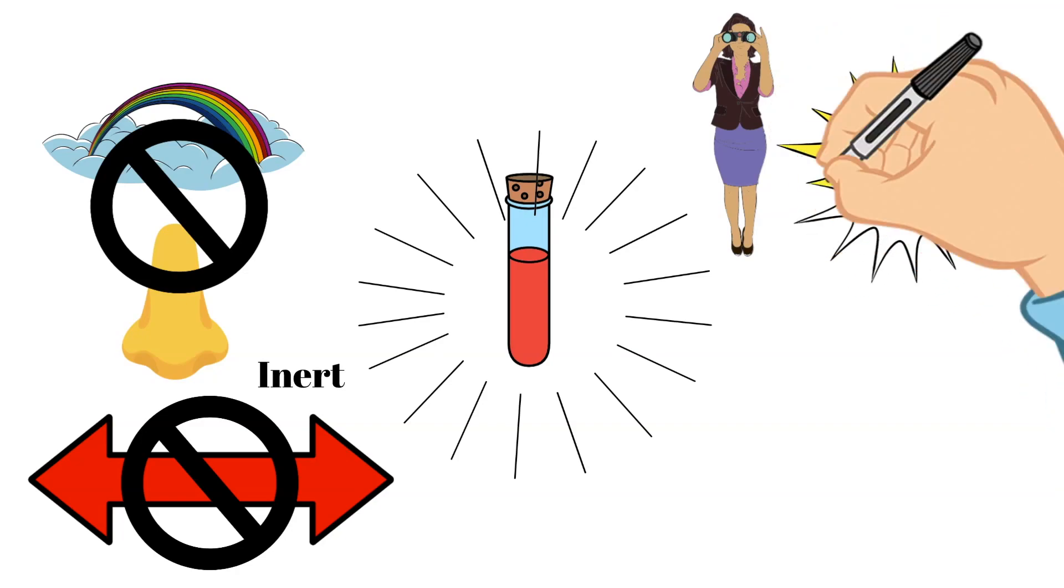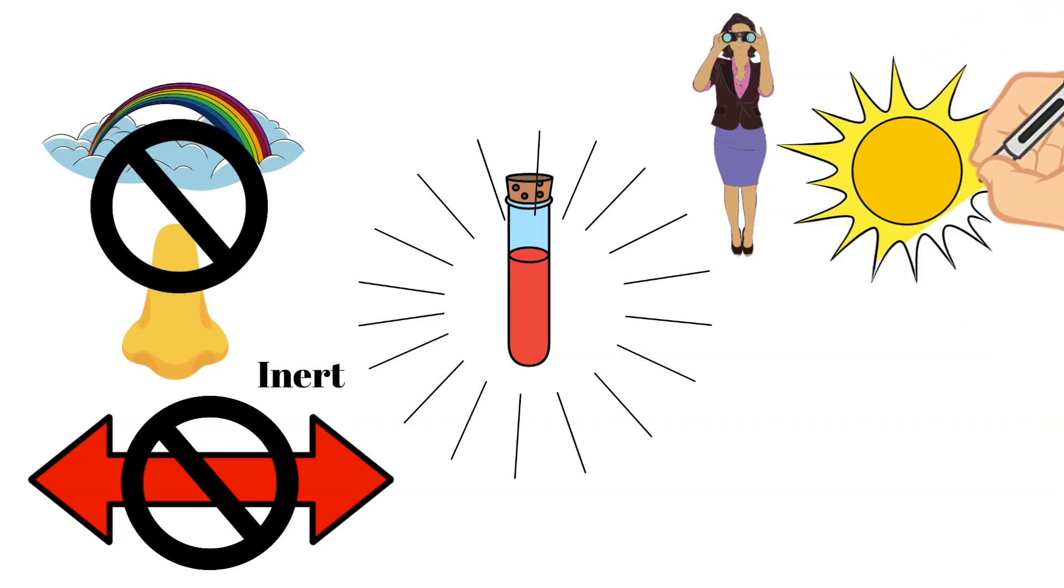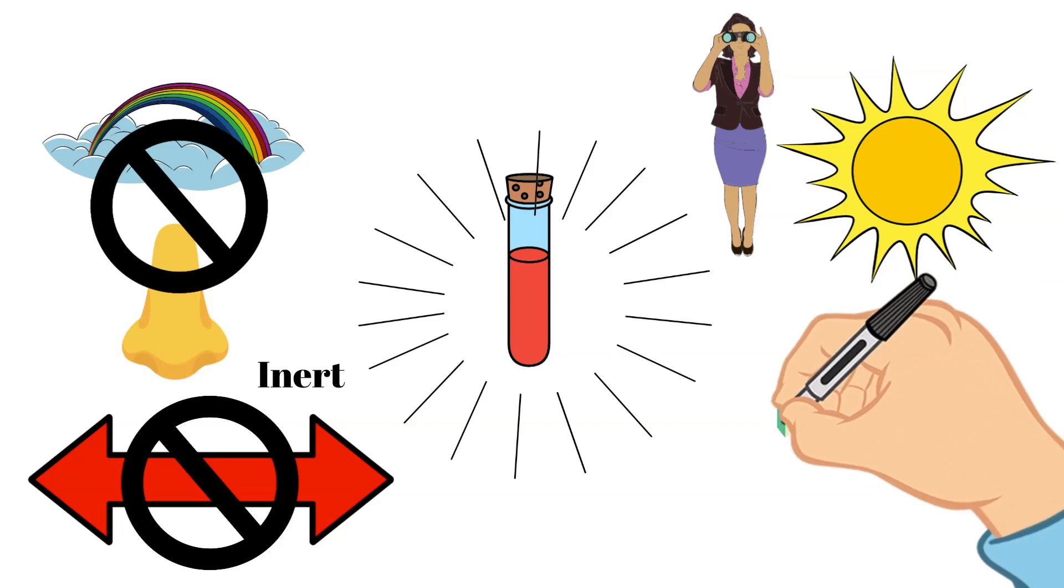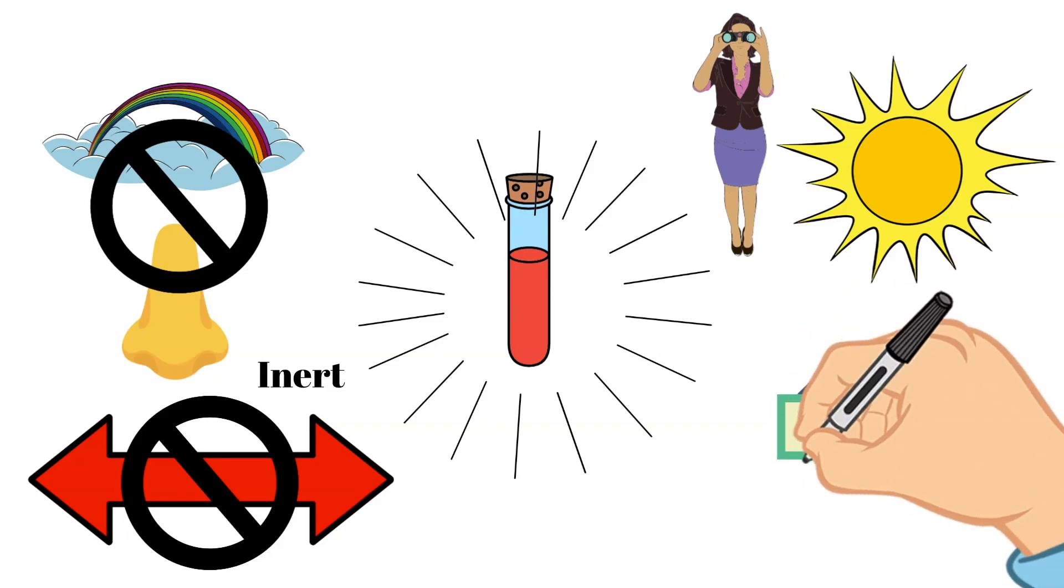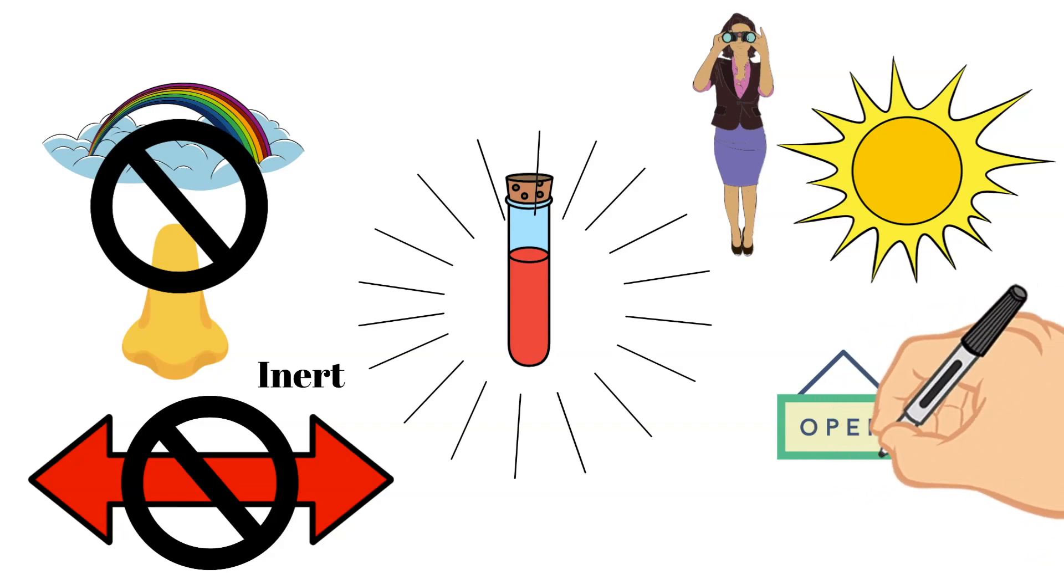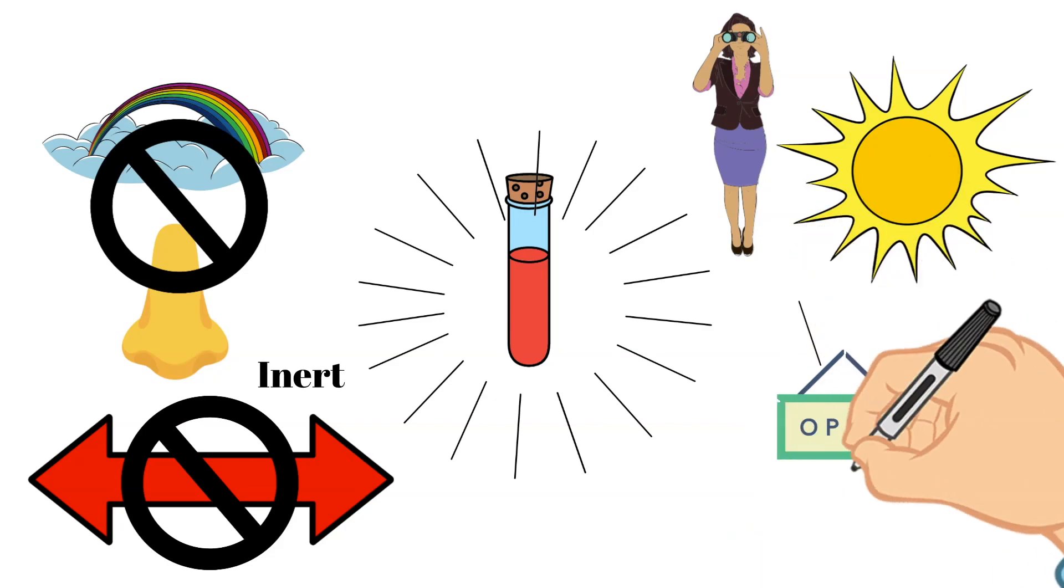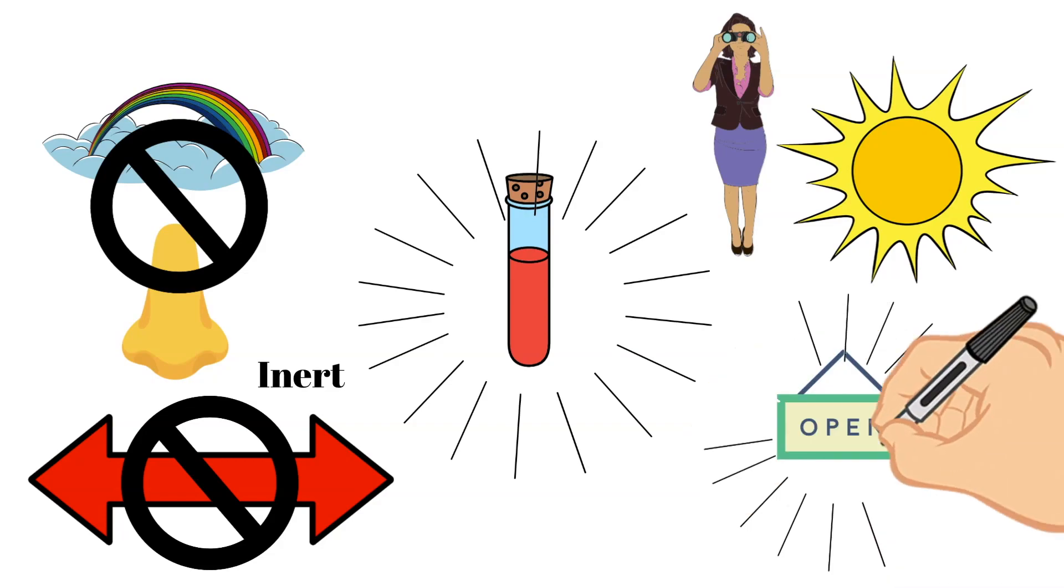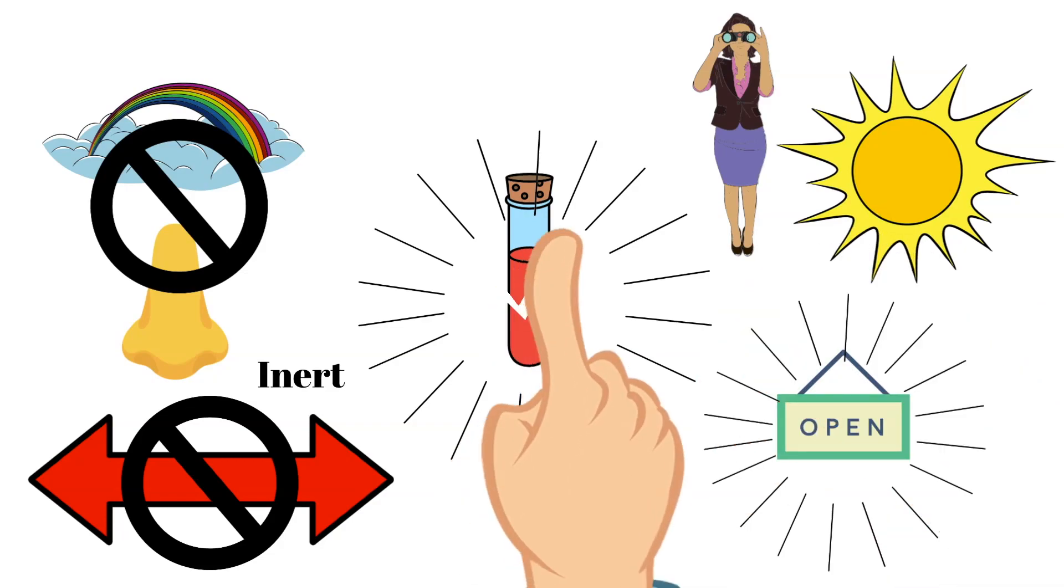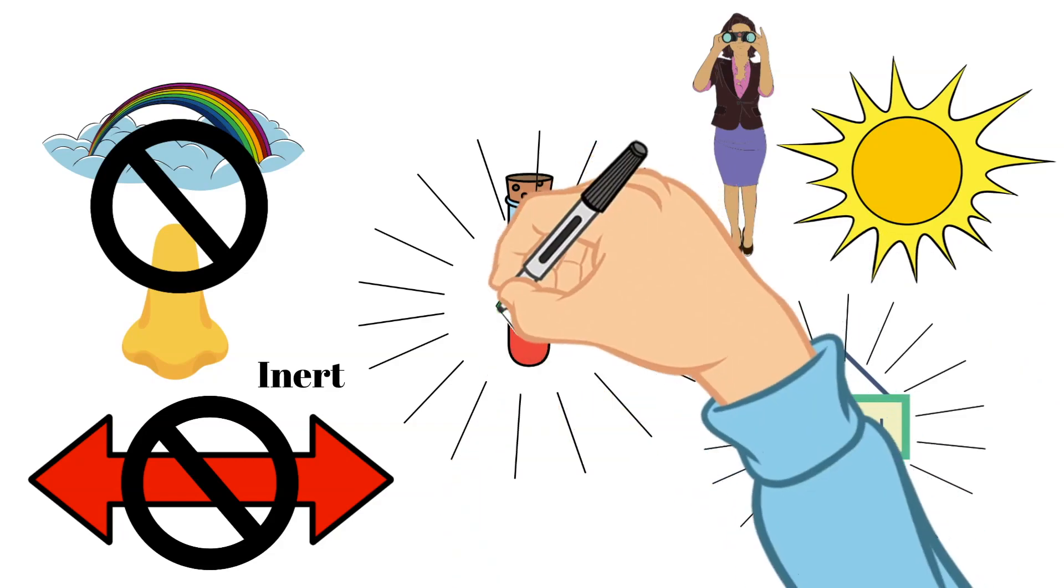We use neon in lighting signs. If you ever see in a shop window a glowing sign, it may use neon to make that sign glow. However, neon is only used to produce the reddish orange glow and we use other gases to create the other colors in these neon signs.